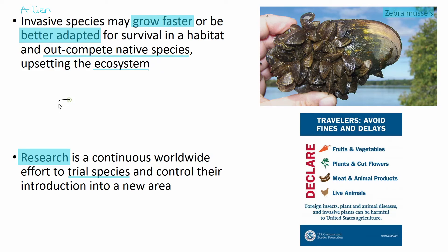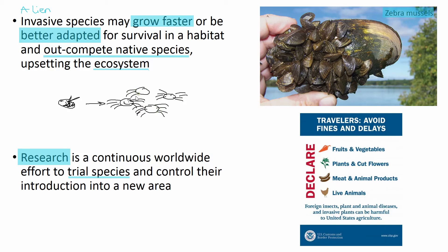Something that actually happened locally to me: we had an invasive species of moths coming in when they were building a new flat complex. To combat this, they carefully introduced a new species of spider into the area that would eat the moths and rebalance the ecosystem. But then we had too many spiders, so we didn't solve the problem — in fact, more people are scared of spiders, so it caused a bigger problem than we had originally. That's how these things can go wrong, and that's why trialing species and controlling their introduction is really important.